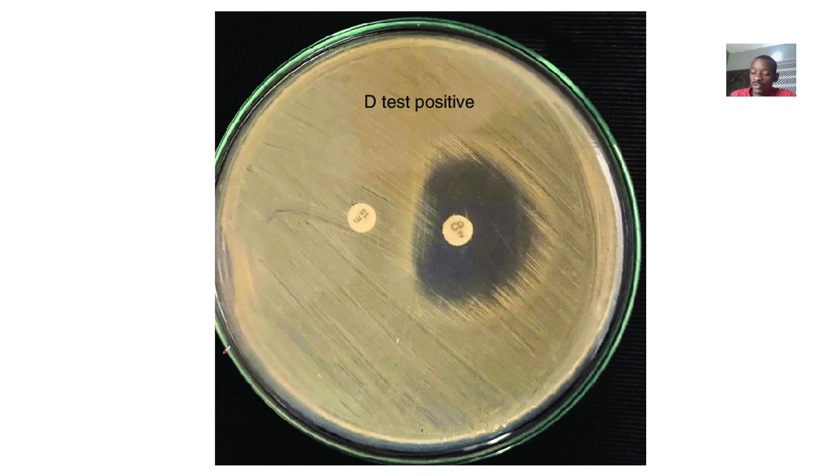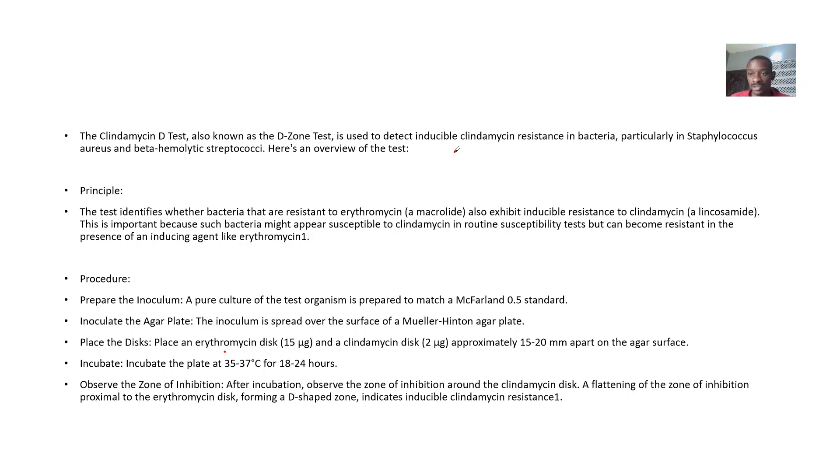If bacteria grow close to the drug, they are not scared of it, so they are resistant. But if they grow and leave a space between them and the drug, it shows that the drug has the ability to kill them. That space is what is known as the clear zone or inhibition zone.